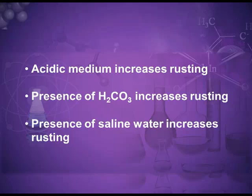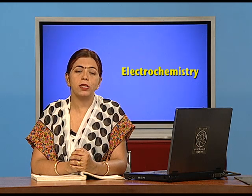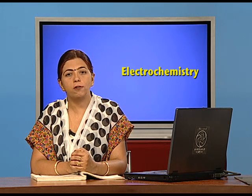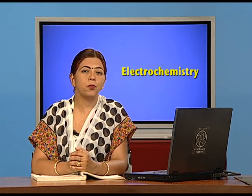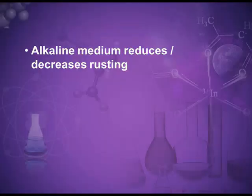Conditions that increase rusting: an acidic medium increases rusting; saline water also increases rusting because it contains many ions; carbonic acid also contributes; and an increase in CO₂ concentration increases rusting because CO₂ dissolves in water to form carbonic acid, which provides hydrogen ions. However, an alkaline medium reduces rusting because it produces OH⁻ ions that neutralize the hydrogen ions required for rusting.